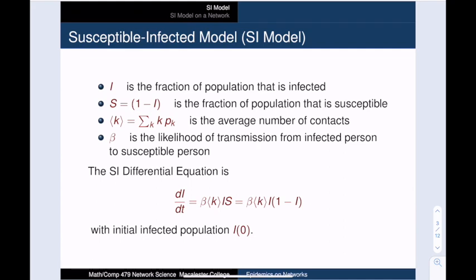We use I to denote the fraction of the population that is infected, and we use S to denote the fraction of the population that is susceptible. And note that since you are either infected or susceptible, we have that S is equal to 1 minus I.